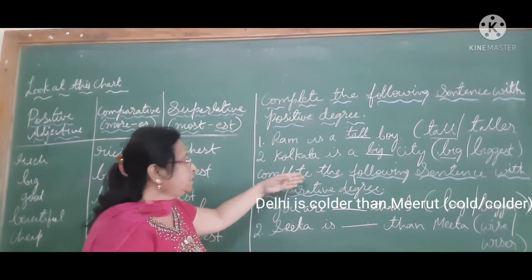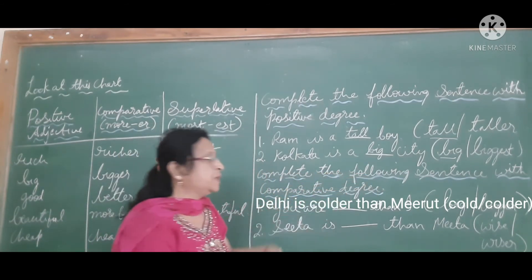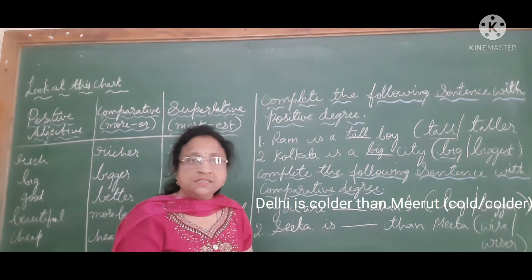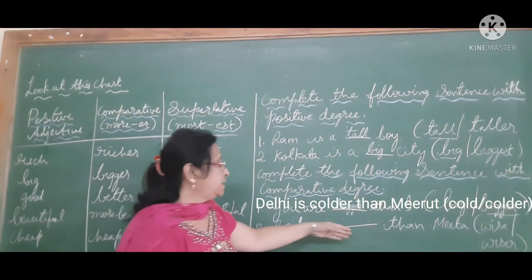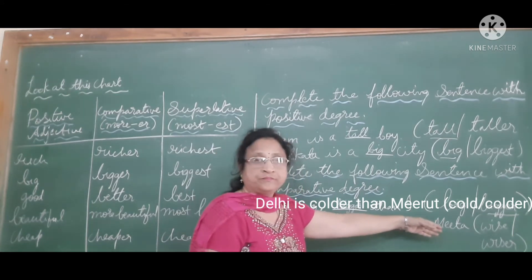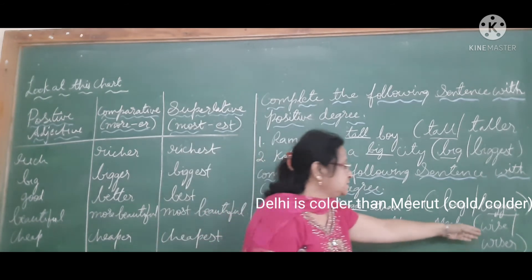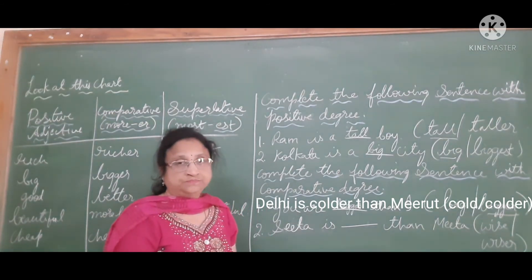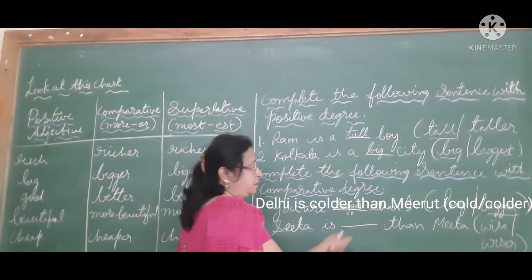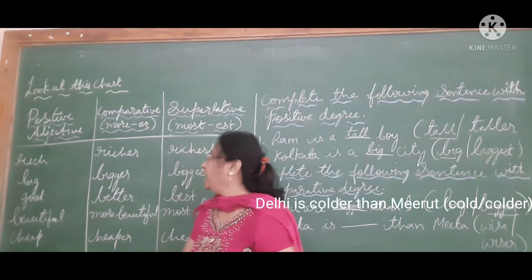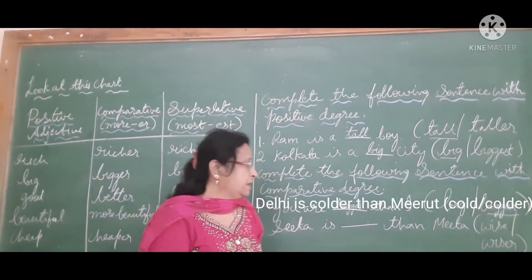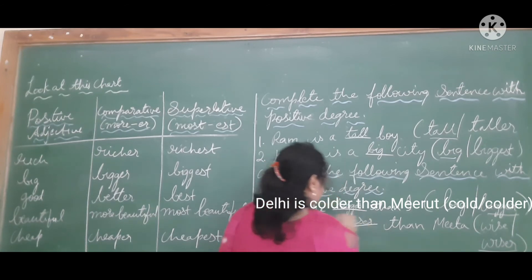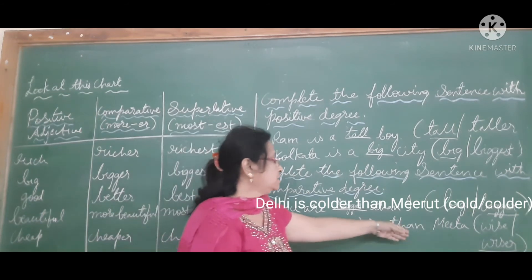Now complete the following sentence with comparative degree. In comparative degree, we compare with two nouns or pronouns. Sentence: Sita is dash than Mita. Sita is dash than Mita — wiser or wise? We are comparing between two girls. When we compare, we add '-er' or 'more'. So the answer is wiser — Sita is wiser than Mita.